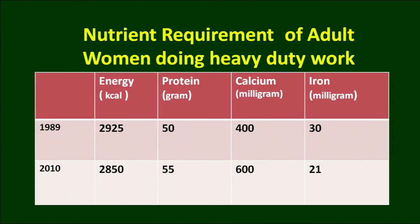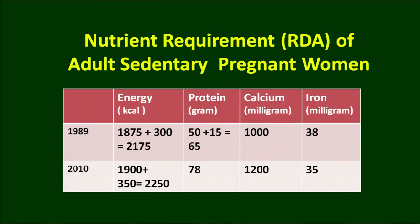The moderate housewife needs more calories. Women doing heavy duty work in agriculture fields, industries, or construction sites require much higher energy — 2850 calories per day. One of the factors we discussed is that energy and nutrient requirements differ in different physiological conditions.